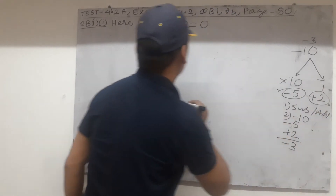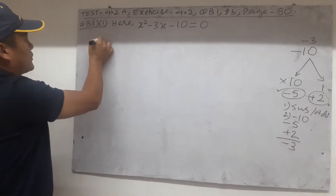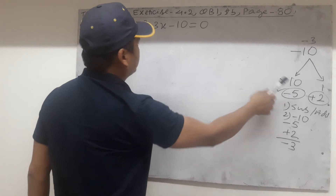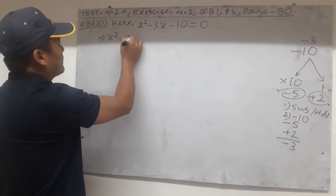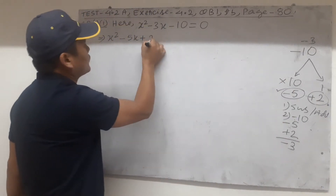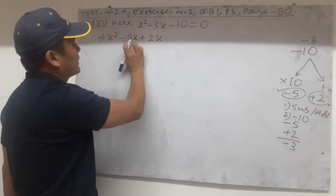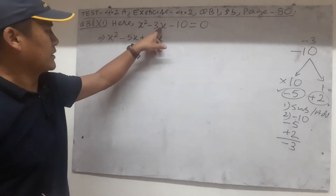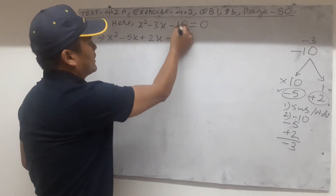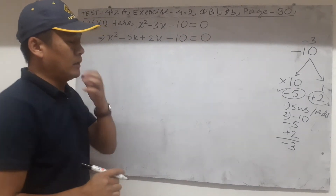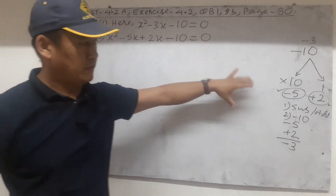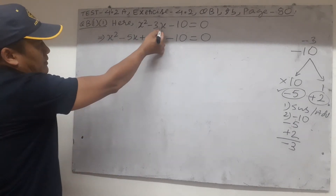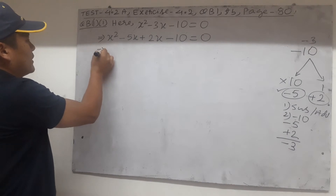We're going to use these two now to split the middle term — this is called splitting the middle term, involved in factorization. So we write x squared, then in place of minus 3x we write minus 5x plus 2x, because combined that gives minus 3x and multiplied gives minus 10. So minus 5x plus 2x equals minus 3x, replacing minus 3x. Then minus 10 equals 0. This step is called splitting the middle term. Now we have four terms.